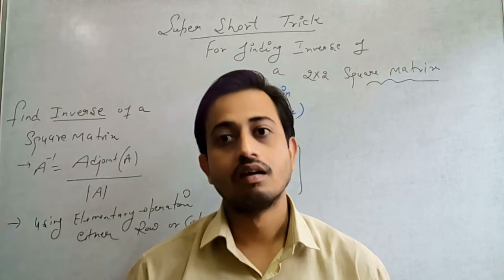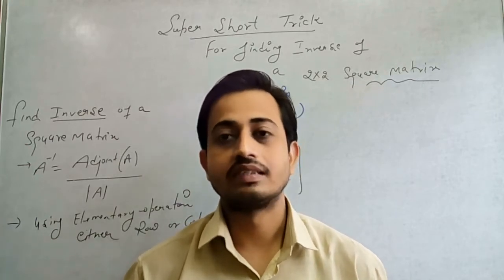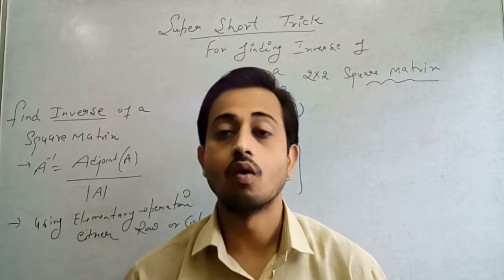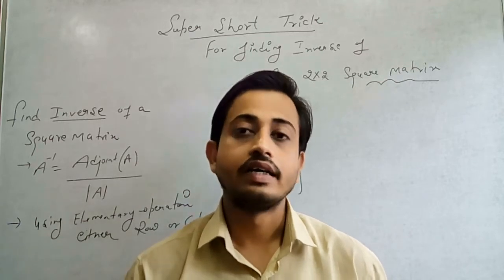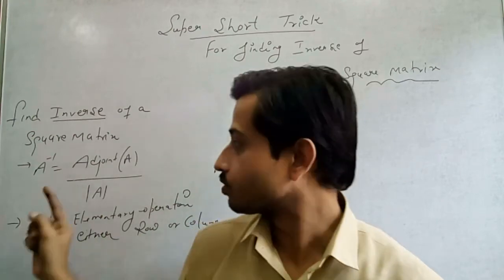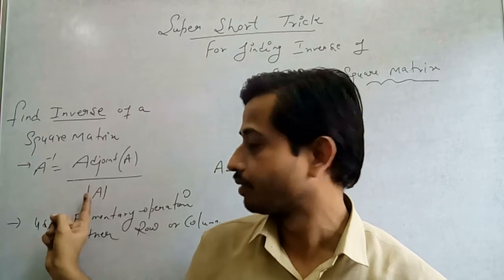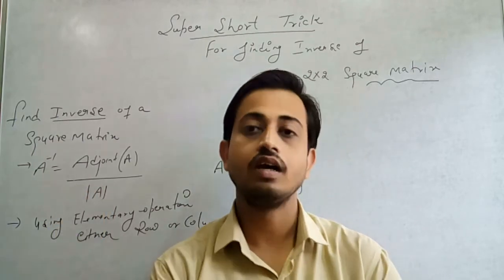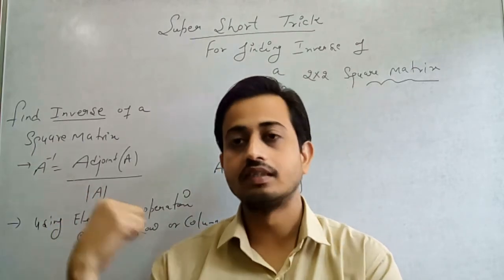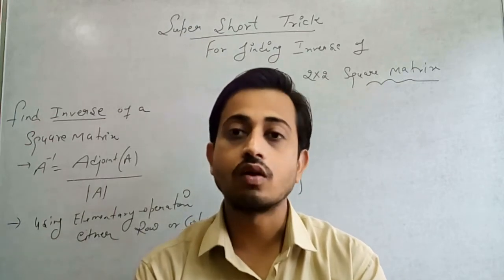Before starting the short trick, first we have to know how many methods we already know to calculate A inverse. The first method is to use the formula which is A inverse equals adjoint of A divided by determinant of A. Whenever we apply this method, we have to first calculate the adjoint, and you know how we calculate the adjoint.